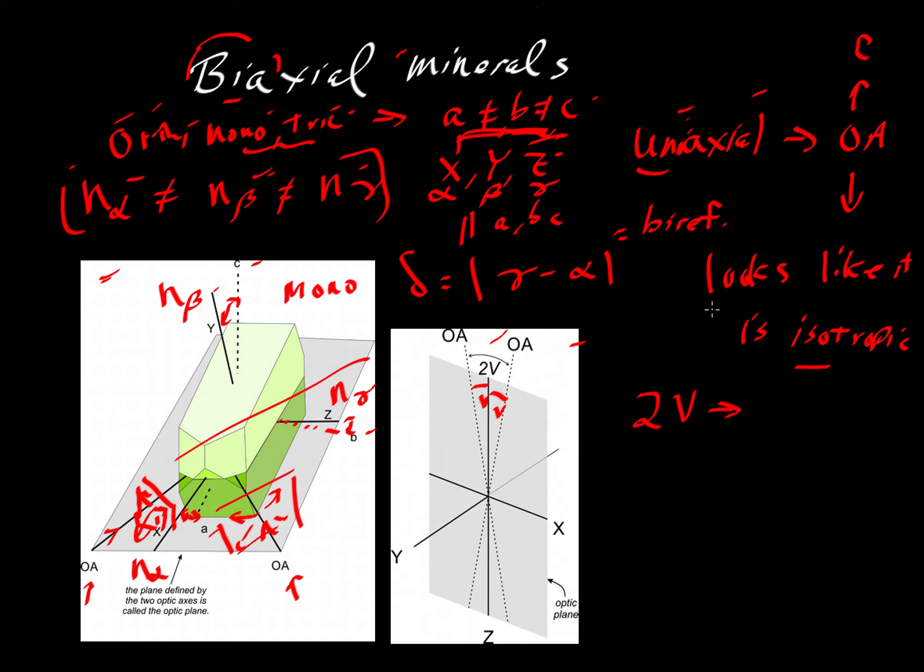But something that biaxial minerals have that uniaxial do not have is this 2v angle. And so this is the angle between the two optic axes, the two OA that are shown in this figure. Notice here that as the 2v approaches 0, then what happens? If the 2v is equal to 0, then we would have a uniaxial mineral. This guy would now be the same as this guy here as this angle disappears. So you can consider the uniaxial minerals to be a special case where the 2v is equal to 0, and then we would have minerals that are effectively in a hexagonal and tetragonal system.